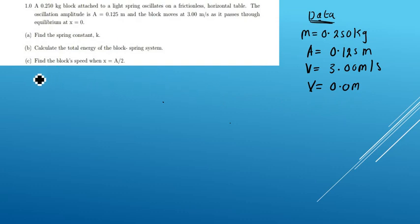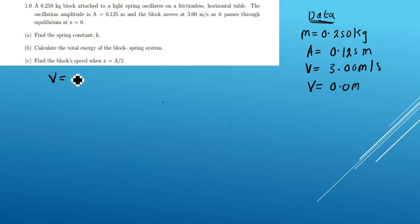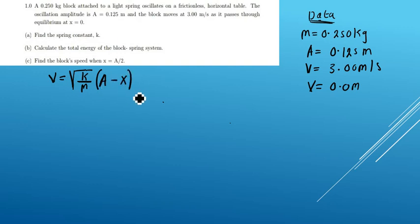To find the spring constant, remember from the first tutorial that the velocity has a relationship with the spring constant. The velocity is equivalent to the square root of k over m, multiplied by the oscillation amplitude minus x. Now we want to find the spring constant, so I'm going to square both sides.